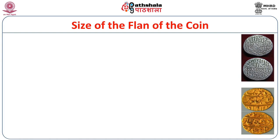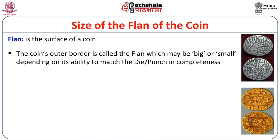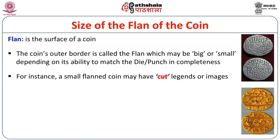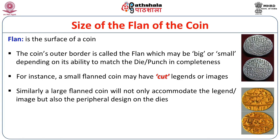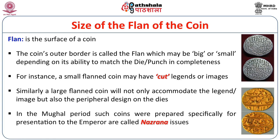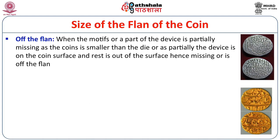So far we have seen what a coin is and what is stamped on it. Now we go to the term 'planchet.' The planchet is the surface of a coin. The coin's outer border is called the planchet, which may be big or small depending on its ability to match the die punch in completeness. A small planchet coin may have cut legends or images, while a large planchet coin will accommodate the legend, image, and the peripheral design on the die. In the Mughal period, coins specially prepared for presentation to the emperor are called Nazrana issues. 'Off the planchet' refers to when the motifs or part of the device are partially missing because the coin is smaller than the die, or the die is only partially on the coin surface.